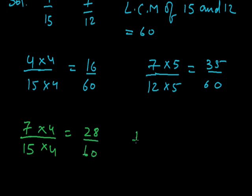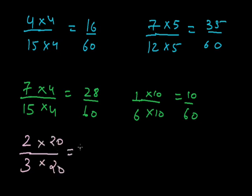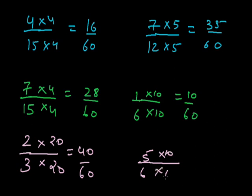The next number is 1 by 6. So, I have to multiply it by 10, so it will be 10 by 60. Now, the next number will be 2 by 3. So, I have to multiply it by 20, so it will be 40 by 60. The next number is 5 by 6. I have to multiply it by 10 so that the denominator becomes 60, so it will be 50 upon 60.